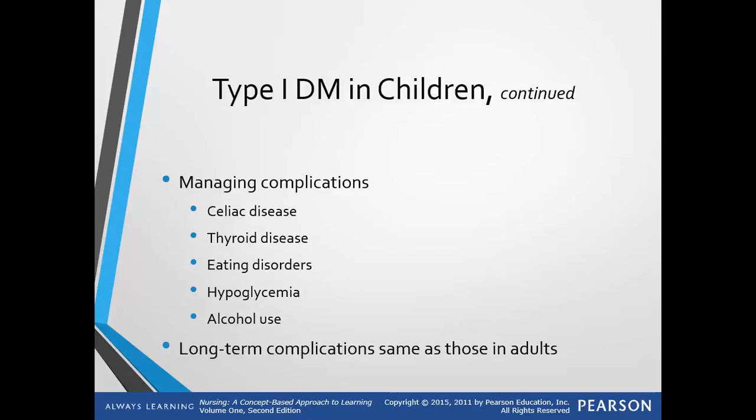Managing complications: many are going to be the same as in adults, while some are more prevalent in children. Celiac disease — they cannot hydrolyze peptides that contain gluten — occurs with increased frequency in kids with type 1 diabetes. It is also called non-tropical sprue. Thyroid disease is an autoimmune disorder, usually hypothyroidism, but can less commonly be caused by hyperthyroidism.